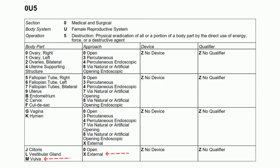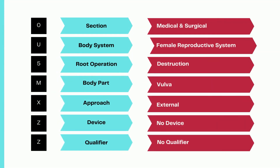The third code for destruction of condyloma of the vulva is 0U5MXZ Z — medical and surgical, female reproductive system, destruction, body part value M for vulva, approach X for external. The approach differs here because the vulva is externally accessible and the speculum was not inserted for this condyloma. So both the body part value and the approach are different compared to the first two codes.